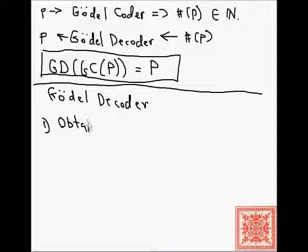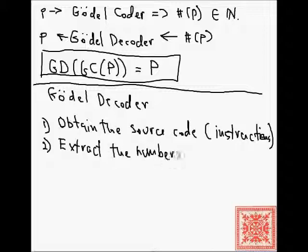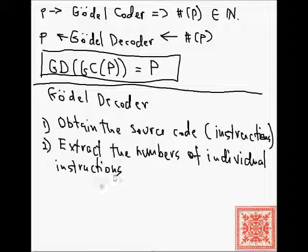First, we have to obtain the number of the source code — the natural number that encodes all of the instructions of the compiled program. Second, we need to extract the number of each individual instruction. And from those numbers, extract the actual source code of each instruction.